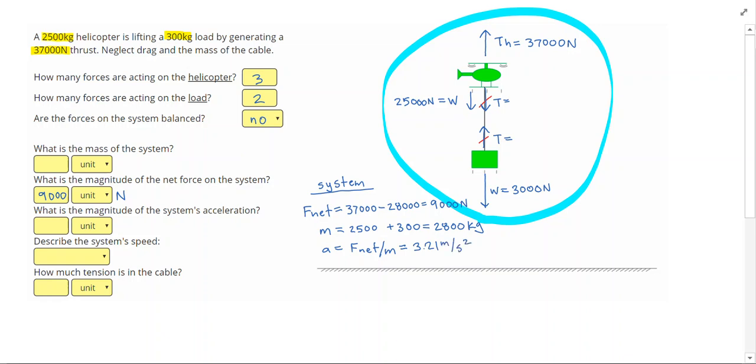Let's fill these answers out on the left, so our mass of the system, everything that was moving added up to 2800 kilograms. The system, the acceleration of the system was 3.21 meters per second squared.